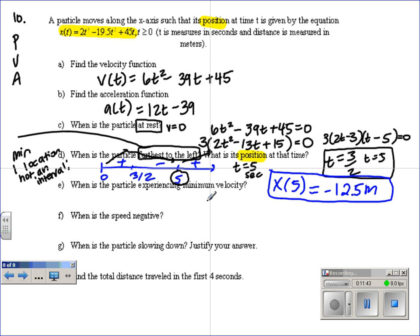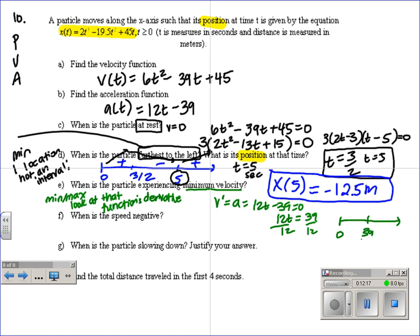When is the particle experiencing minimum velocity? Anytime you take a min or a max of anything, you look at that function's derivative. Whatever that function is, that's just a concept. So in this case, we're talking about velocity. So you look at v prime, which is acceleration. 12t minus 39. We do the first derivative test, which means set it equal to 0. We get t equals 39 over 12. So if I plug in 39 over 12 on a number line, it's a. We get 1. Make this negative and positive. So velocity is decreasing and then increasing, which means this is a minimum. At 39 twelfths, or you can simplify it.